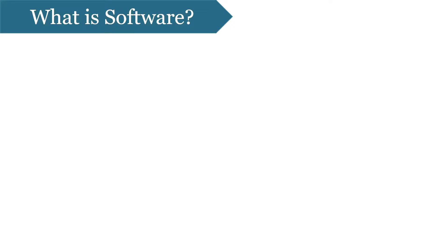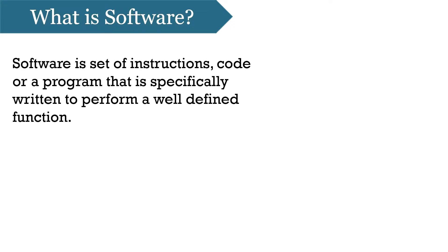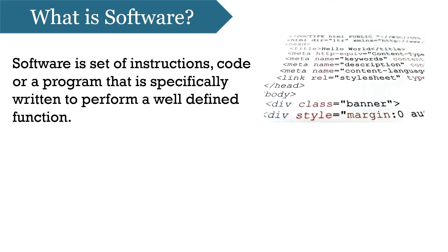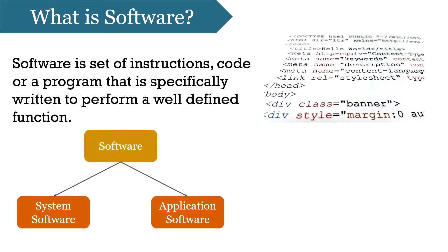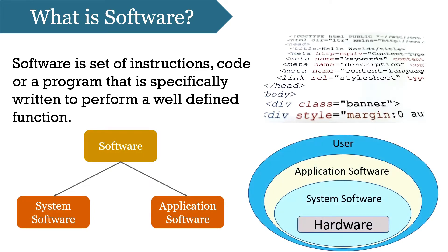What is a software? It is a set of instructions, code or a program that is specifically designed to perform a well-defined function. Like if we talk of the software PowerPoint, we know it is specifically designed to prepare presentations; Word is used to create documents; Browser is used for surfing the internet, etc. Now, if we classify software, it can be divided into two categories: system software and application software.